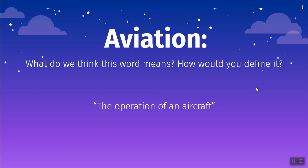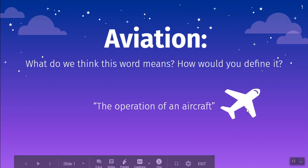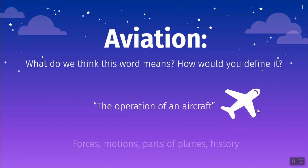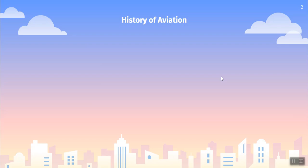Aviation is specifically the operation of an aircraft — so flight, but related to these things. As we go throughout this unit, we're going to look at aviation and focus on the forces, motions, and parts of aircraft, as well as the history behind them. Speaking of the history, let's start there. Do you know anything about the start of aviation? Have you ever heard anything about the first flight — who did it, where they were, or when it was?